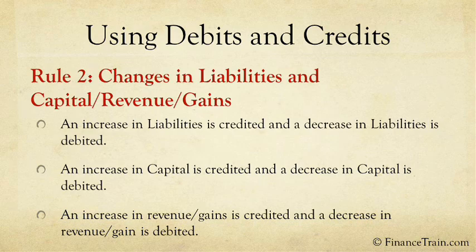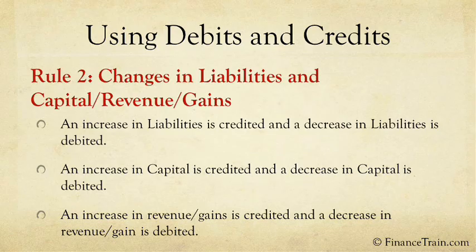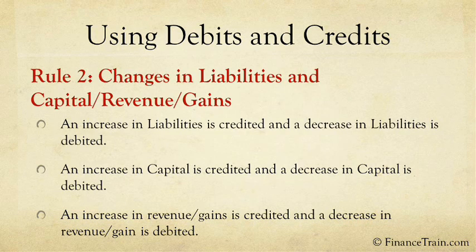Note that this is exactly the opposite of asset and expense accounts. In an asset or expense account, an increase is debited and a decrease is credited. However, in a liability or revenue account, an increase is credited and a decrease is debited. If you can remember these simple rules, the rest of accounting is just common sense.